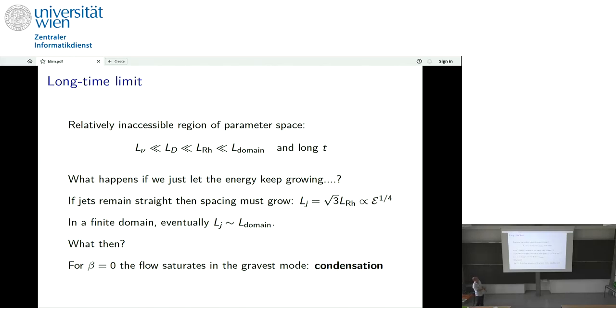So that's all kind of preamble to this limit that I want to talk about. It's a quite difficult region of parameter space to study. It requires three strong, much bigger than, inequalities. The deformation radius has to be much less than the Rhein scale, much less than the domain scale, and you have to integrate these things for a long, long time. So I'm trying to think how can we simplify things a little bit, and what I'm going to do in the next part is basically relax this inequality. What happens if we just let energy keep going into the system? How do the jets respond?